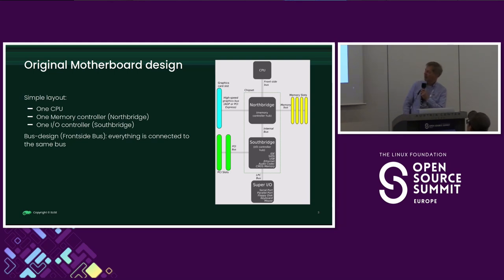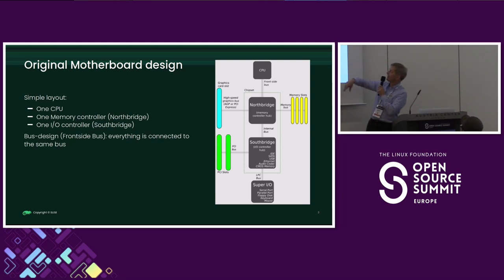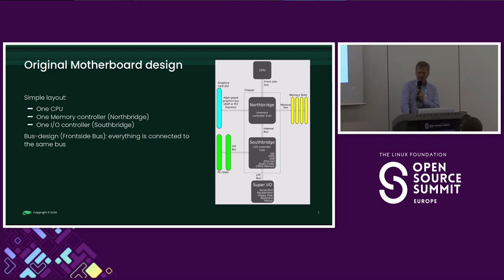Like, how did we even end up here? Why is that a problem? I mean, this whole thing has been there since ages. So where's the problem? The thing is that the original design of computers was actually quite simple. You have your CPU up there, then the Northbridge talking to the memory and high-speed interfaces, and then the Southbridge doing the actual I/O to PCI and lower-level I/O. So all quite easy, all straightforward, not a problem whatsoever. This is what UNIX was originally designed to work on.